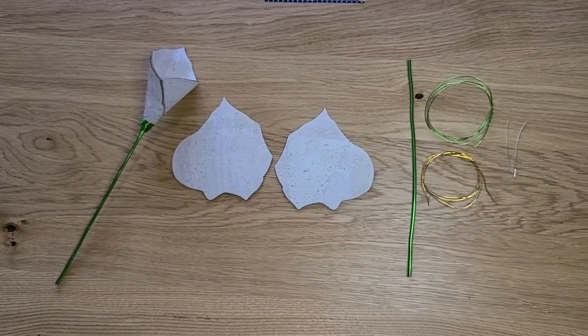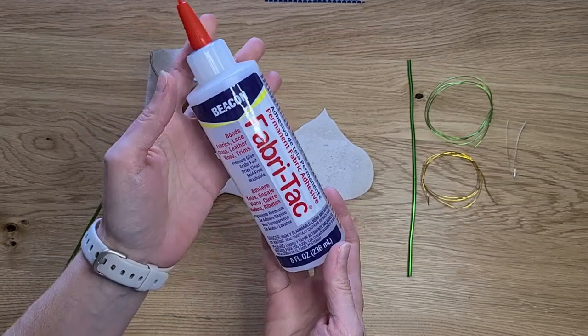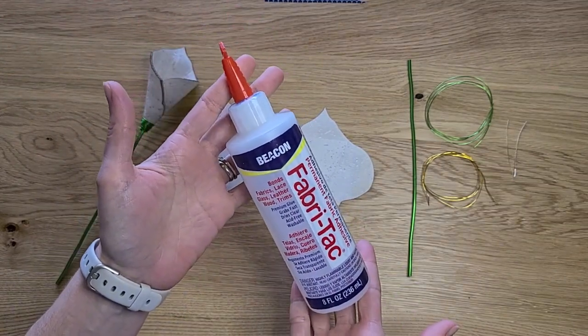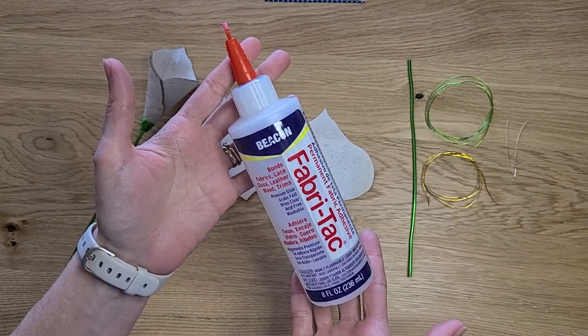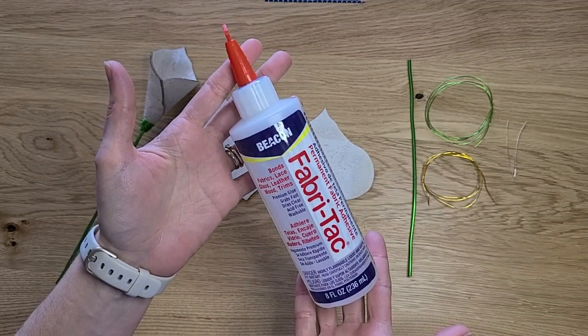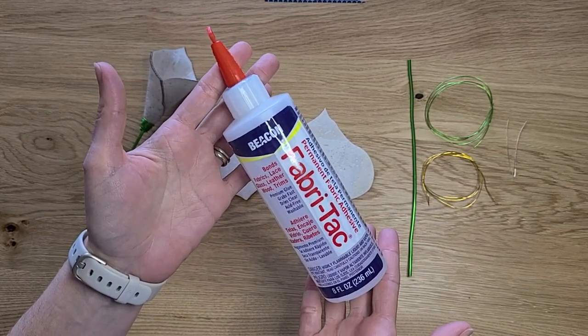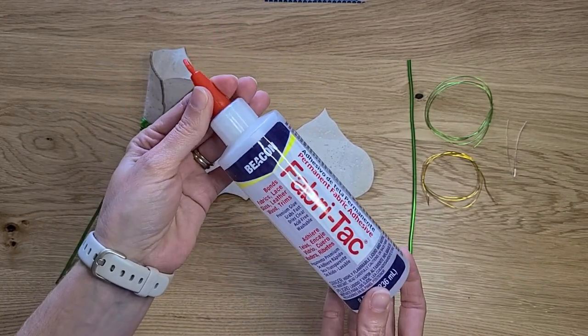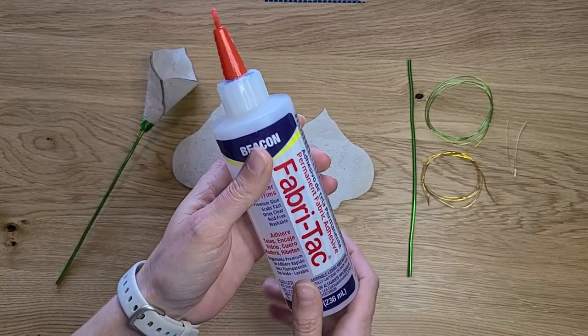Not included in your kit but what you will need from home is fabric glue. The fabric glue that I like to use is FabriTac by Beacon. It dries quickly and holds the fabric together really well. There are different types of fabric glue. If you have one that you like better, by all means use it.